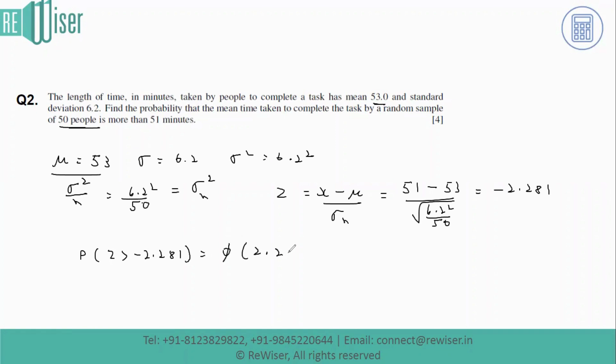Using the normal distribution table, the probability value for this z-score is 0.989, which is the final answer for this question. Thank you students.